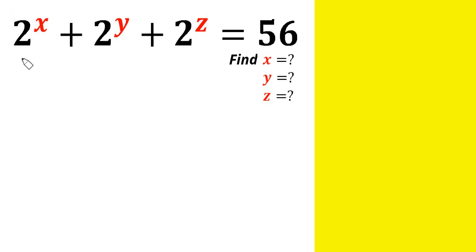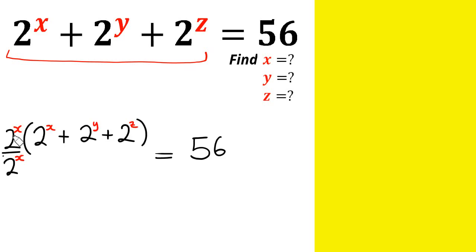So what we're going to do is multiply the left-hand side by 1. We write it as 2 raised by the power of x over 2 raised by the power of x, times the bracket (2 raised by the power of x plus 2 raised by the power of y plus 2 raised by the power of z) equals 56. Don't forget: 2 raised by the power of x over 2 raised by the power of x is just 1.